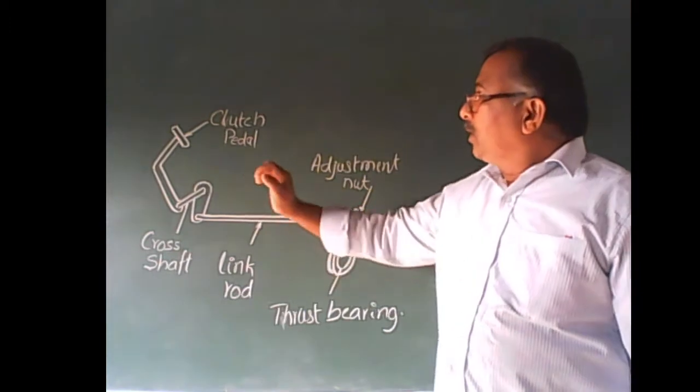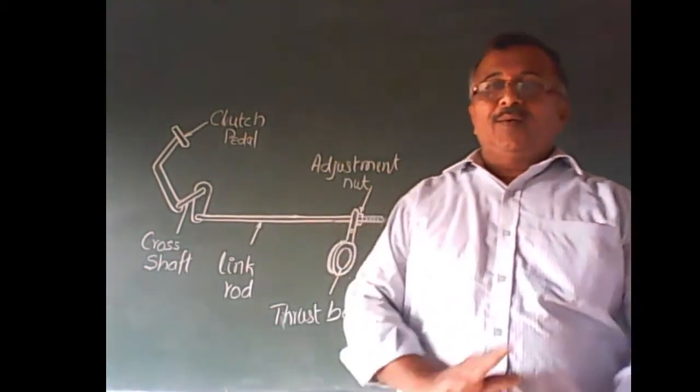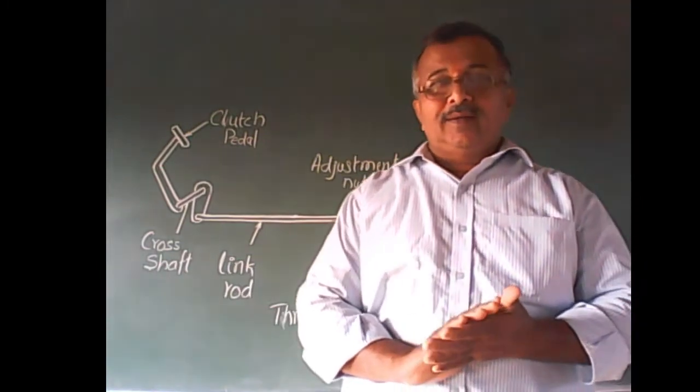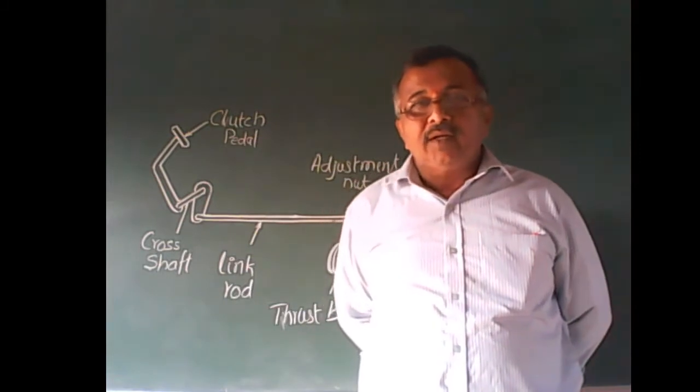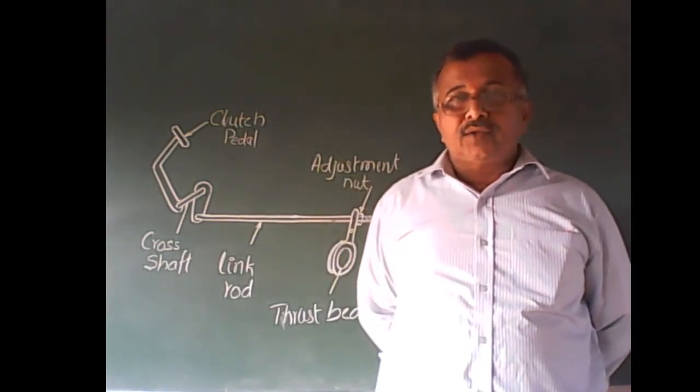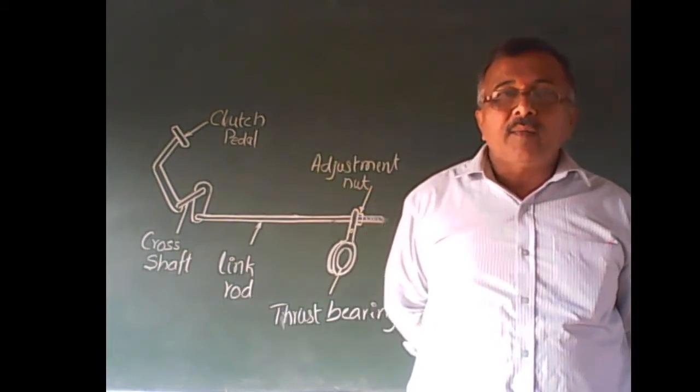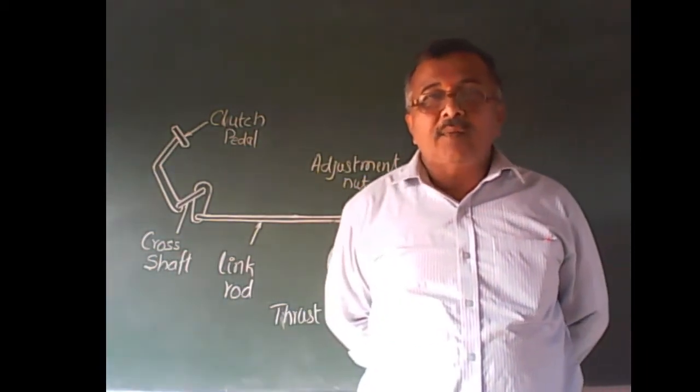In clutch operating mechanism, we are having four types. One is mechanically operated clutch, second one is hydraulically operated clutch, third one is vacuum operated clutch, and fourth one is electrically operated clutch.